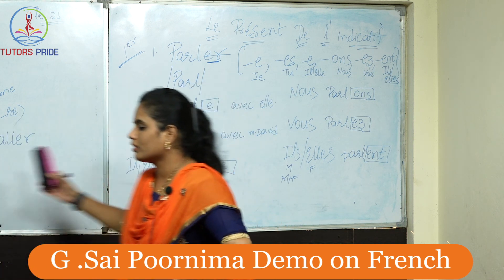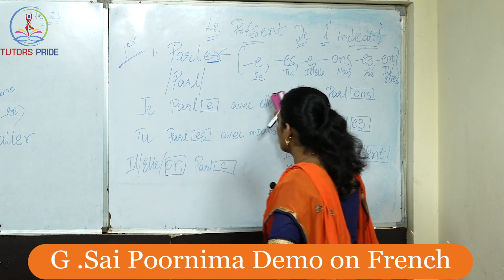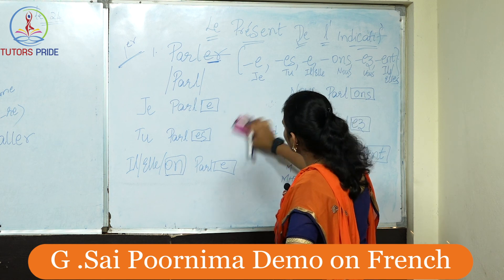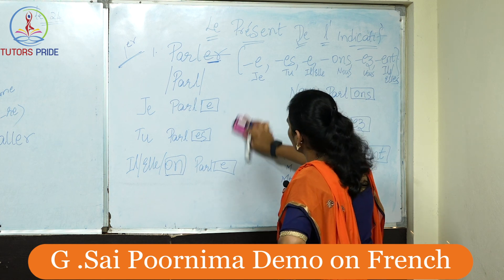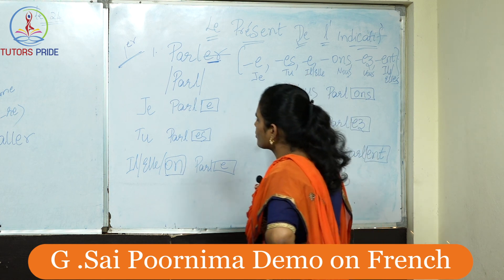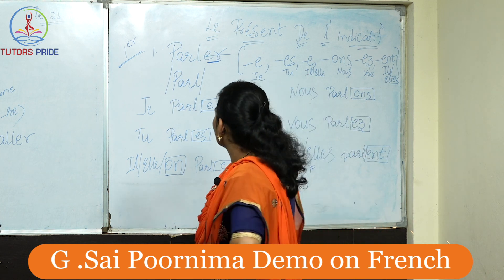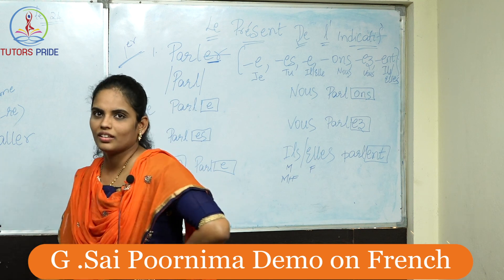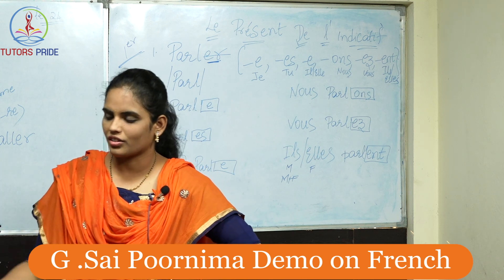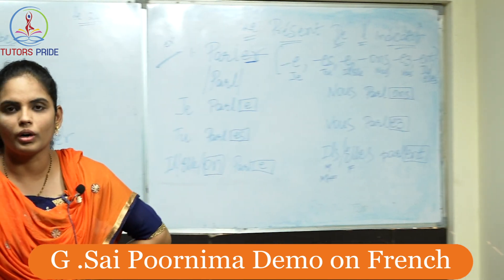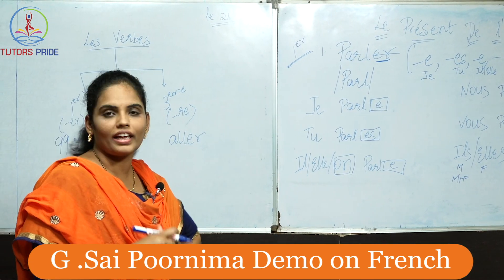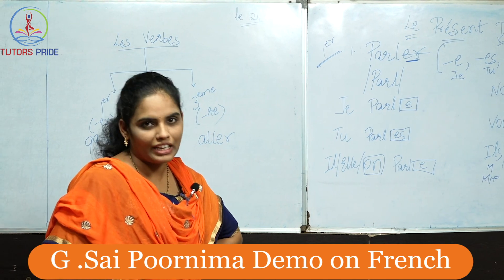Let us take an example sentence: 'Je parle avec Monsieur David' — I speak with David. These are the examples you can write down. This is the end of the first group verb conjugation with one example. Thank you.